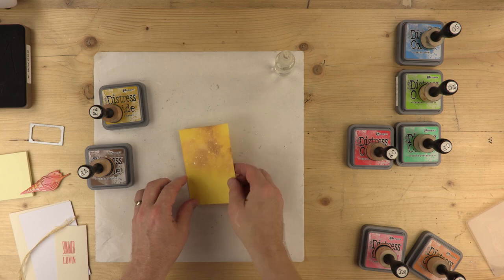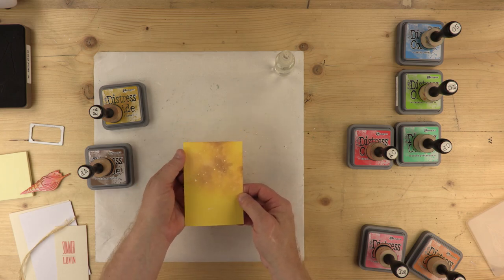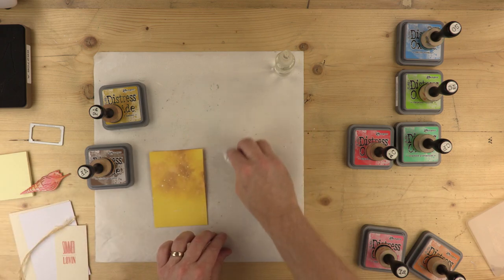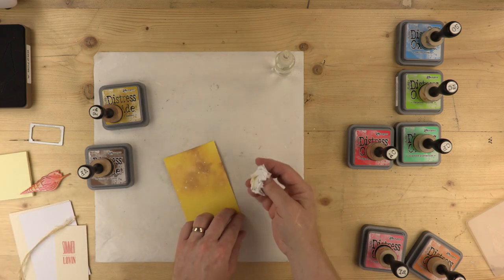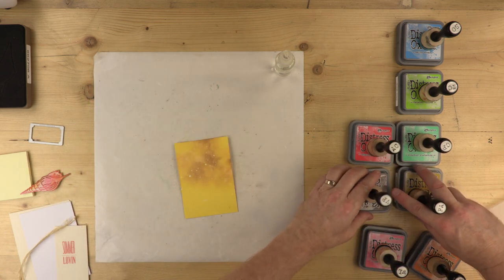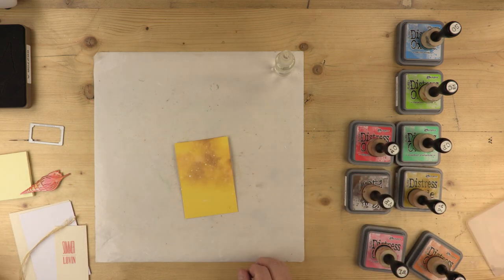There we are. I think that will do it. Now, if you remember when I first did this, it was quite bright, but that's almost become like a sort of a cream colour there. And I'll just mop up any bits on the outside. Now, that's fossilised amber and vintage photo. So that's my beach now.